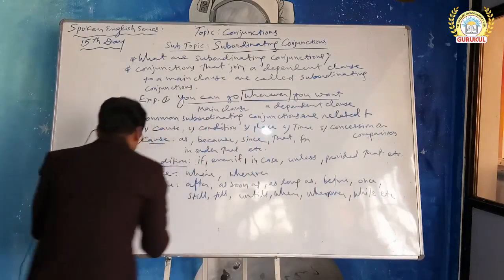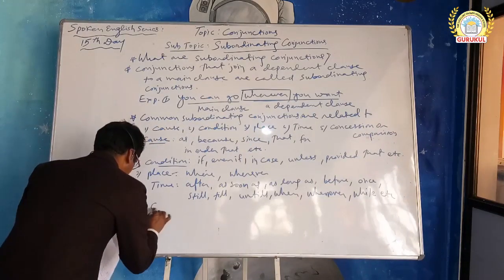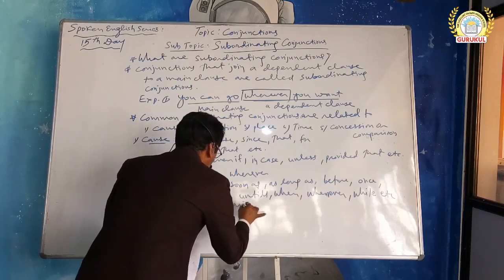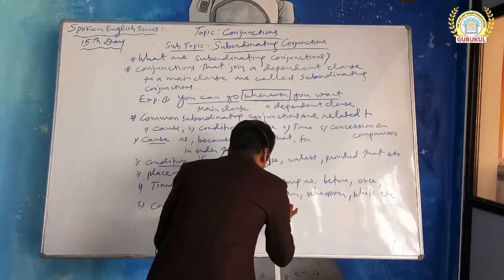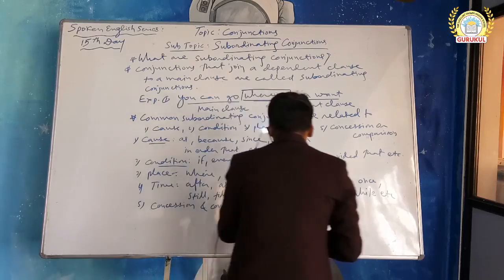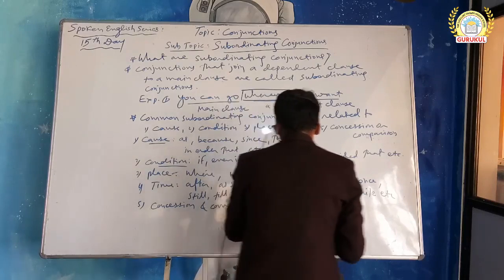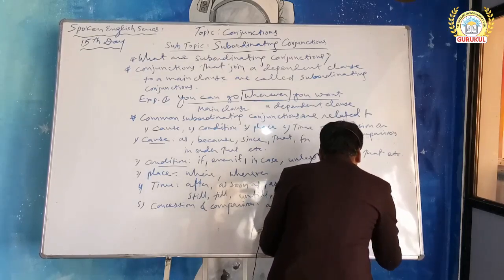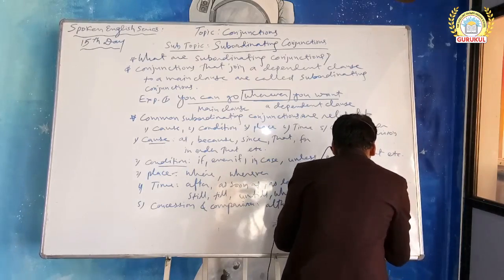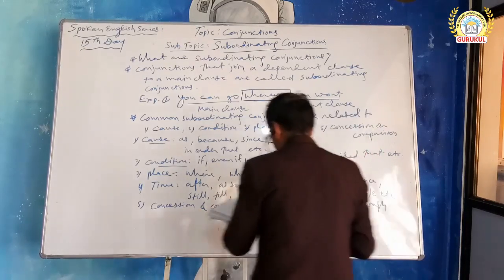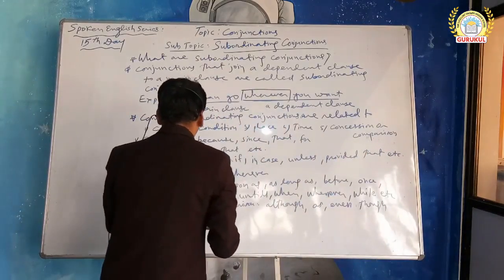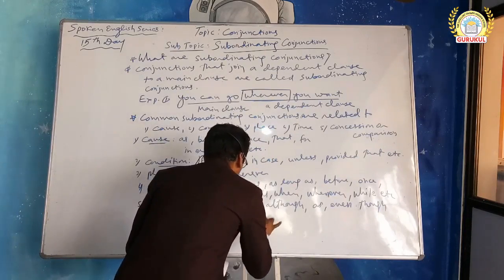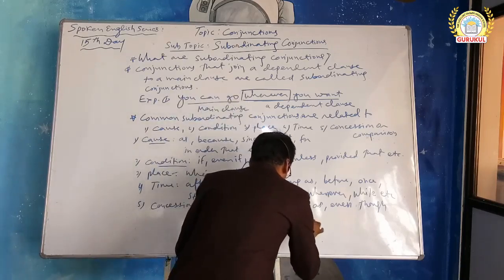Number five: concession or comparison. Conjunctions in this category include: although, as, even if, even though, just as, though, whereas, while.